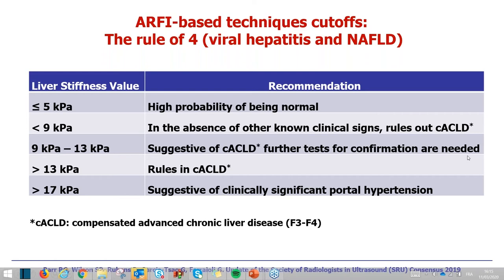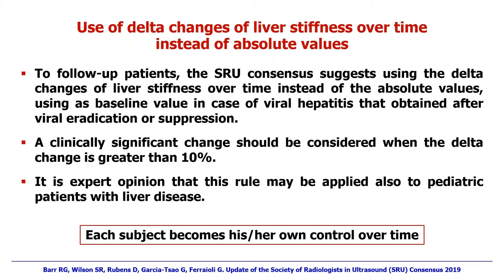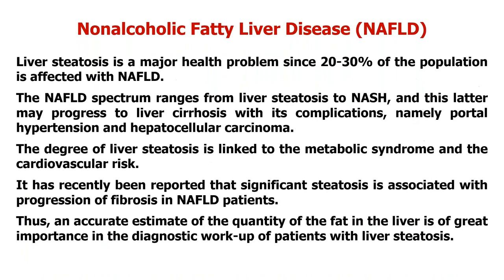Another recommendation is to use the delta change of liver stiffness over time instead of absolute values when following up a patient. In viral hepatitis, the baseline value should be obtained after viral eradication or suppression. A clinically significant change should be considered as a change of at least greater than 10%. This rule can also be applied to pediatric patients, where each subject becomes its own control over time.